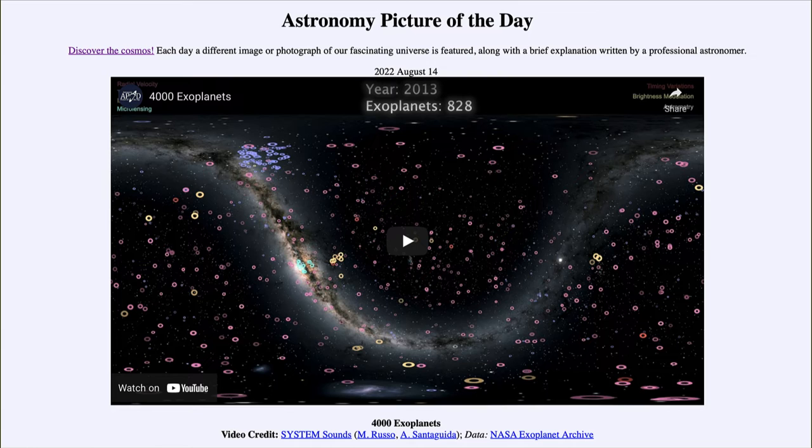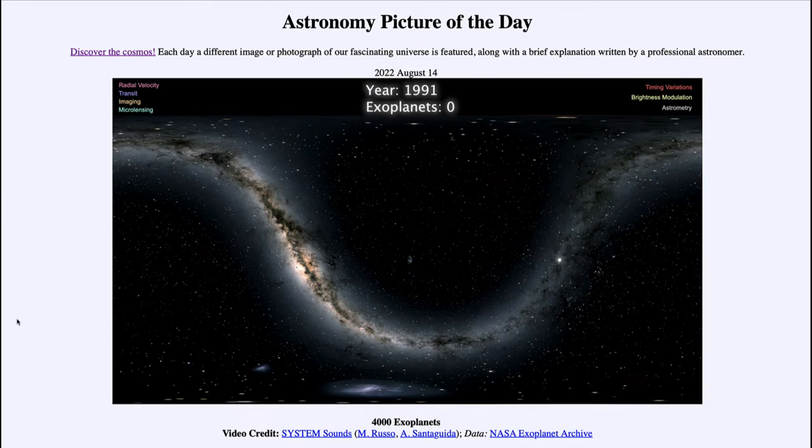That allows us to get some ideas of these new solar systems that are being discovered. So let's go ahead and play the video the first time. We'll watch as we start in 1991 with zero exoplanets. The first two were discovered in 1992 and those were discovered by a pulsar timing method, so they were actually orbiting a dead star.